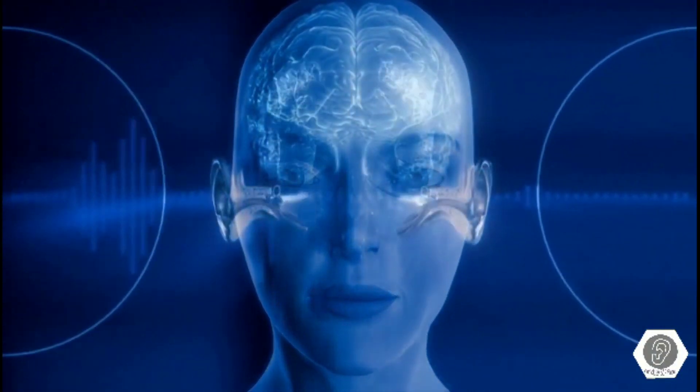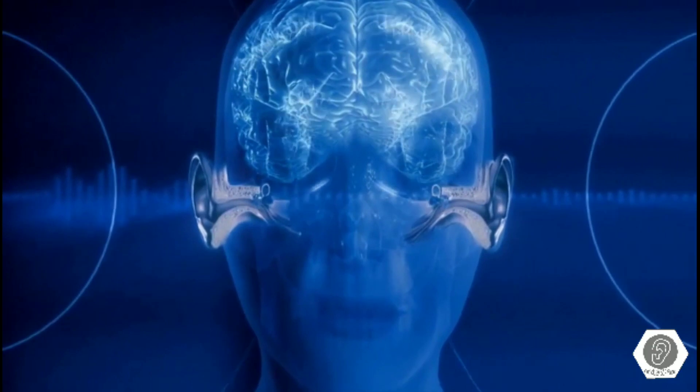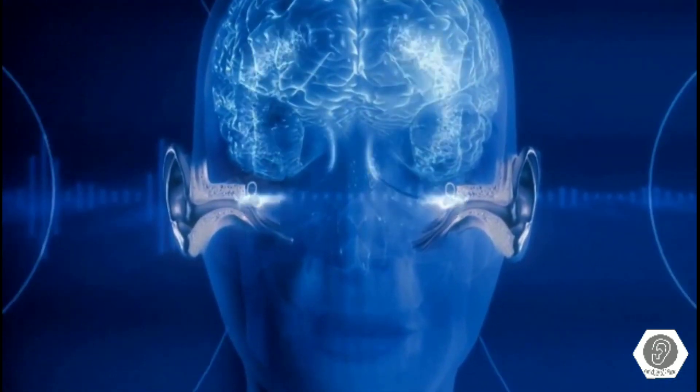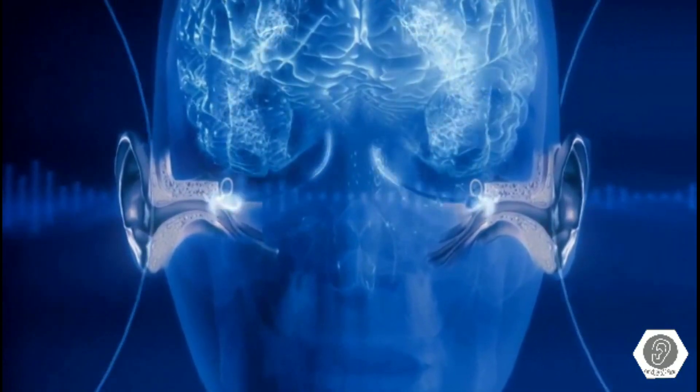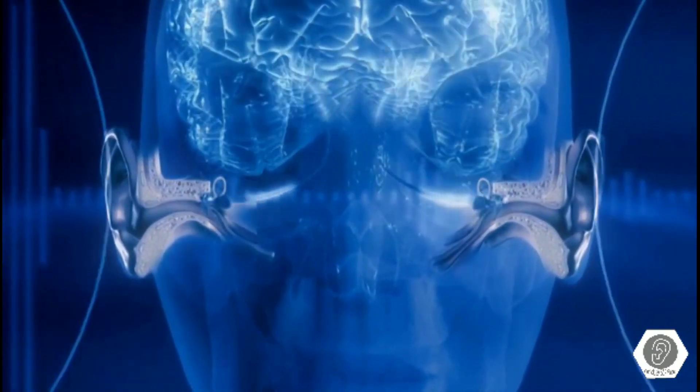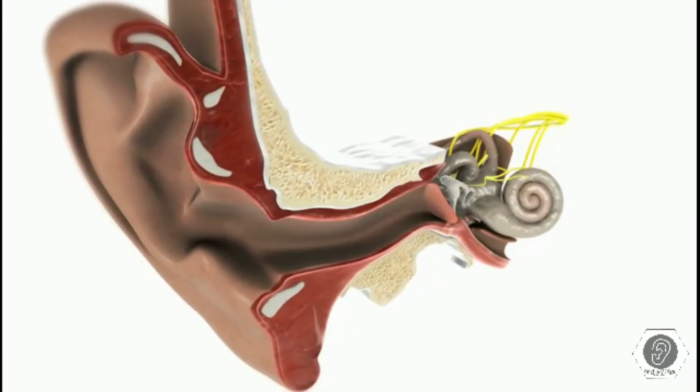During normal hearing, sound waves travel through the ear canal and strike the eardrum, causing it to vibrate. The eardrum is attached to three tiny bones in the middle ear. The last bone, the stapes, pushes on a fluid-filled chamber in the inner ear called the cochlea.